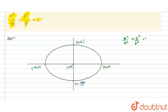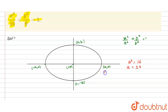Now we have to find these points by comparing the general equation of the ellipse with the given equation. From the comparison, we get a² is equal to 16, so a is equal to ±4. That means we get the points (4, 0) and (−4, 0).